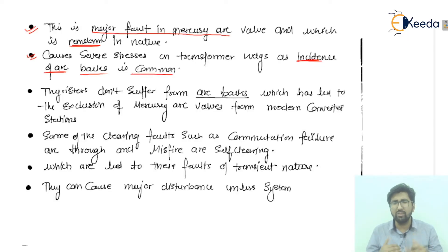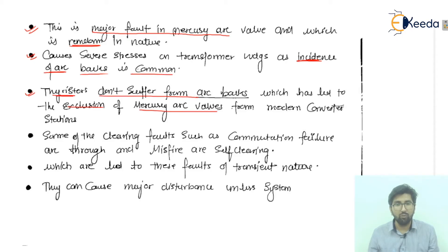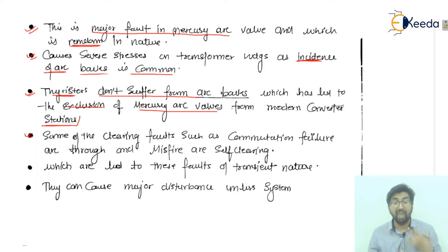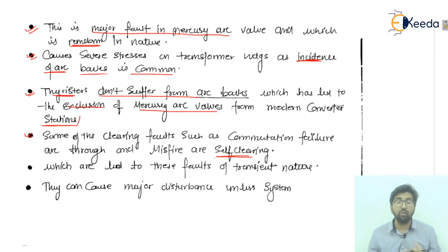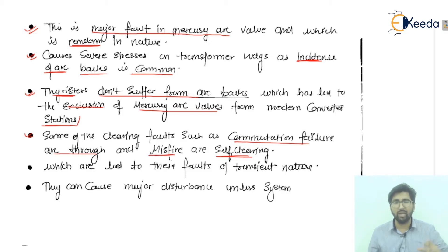Thyristors do not suffer from arc backs, and this has led to the exclusion of mercury arc valves from modern converter stations. Some faults such as commutation failure, arc through, and misfire are actually self-clearing faults. If a question is asked about which fault conditions are self-clearing: the first is commutation failure, the second is arc through, and the third is misfire.